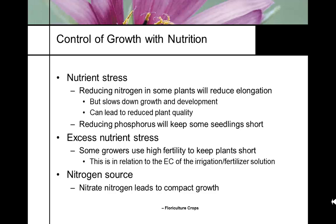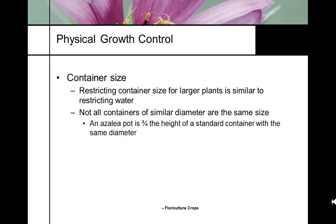Nutrient stress can also regulate plant growth. Reducing nitrogen or even phosphorus can keep plants short. Some growers use high fertility with a high EC level to stunt plants, though it takes a skilled grower to do that. Nitrate nitrogen gives a harder, more compact plant. Restricting container size can sometimes give a more compact plant, but it's not a good way to control plant growth.